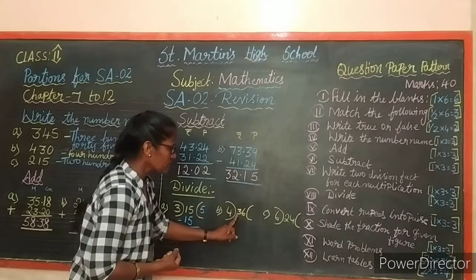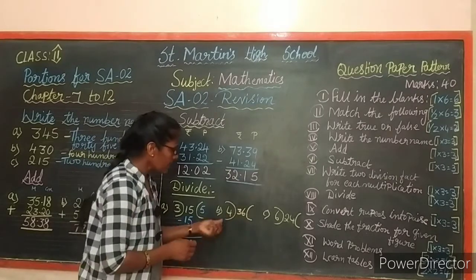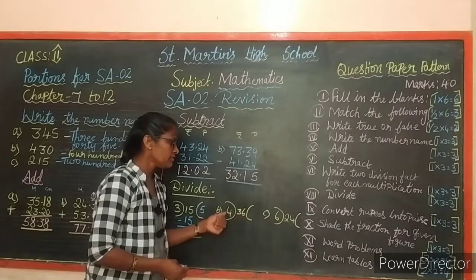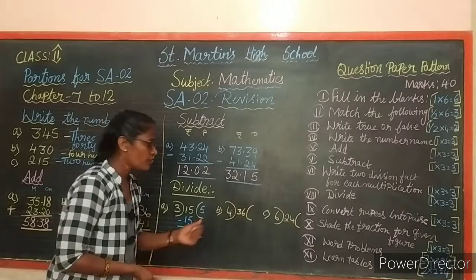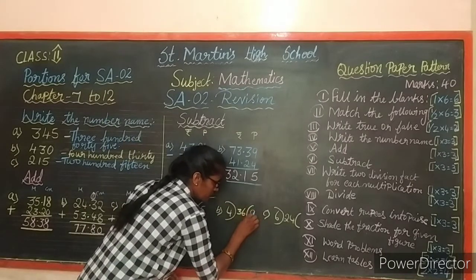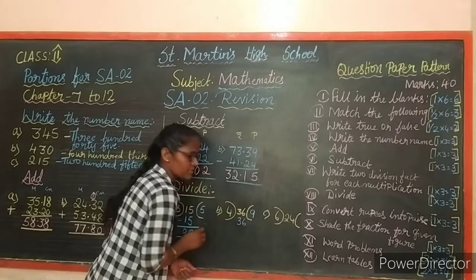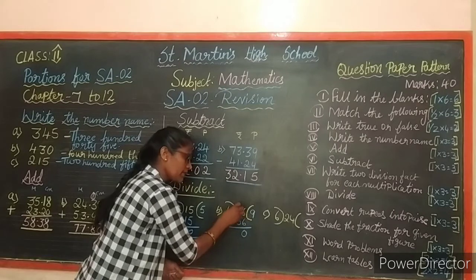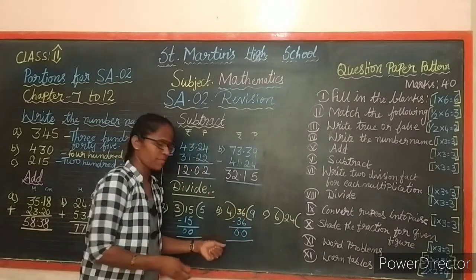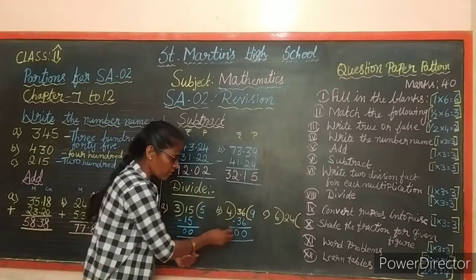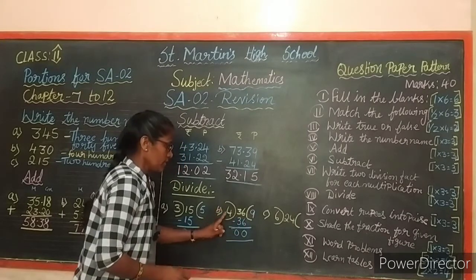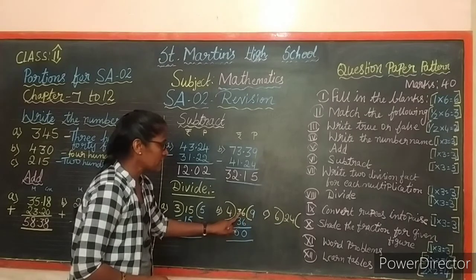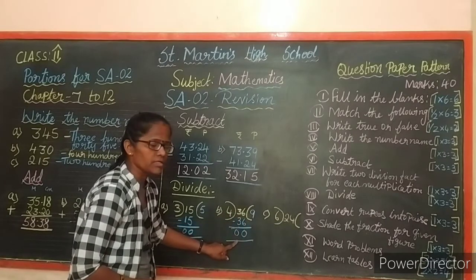Next: 36 divided by 4. Use the 4 times table. 4 nines are 36. Subtract: 6 minus 6 is 0, 3 minus 3 is 0. Remainder is 0 and quotient is 9.